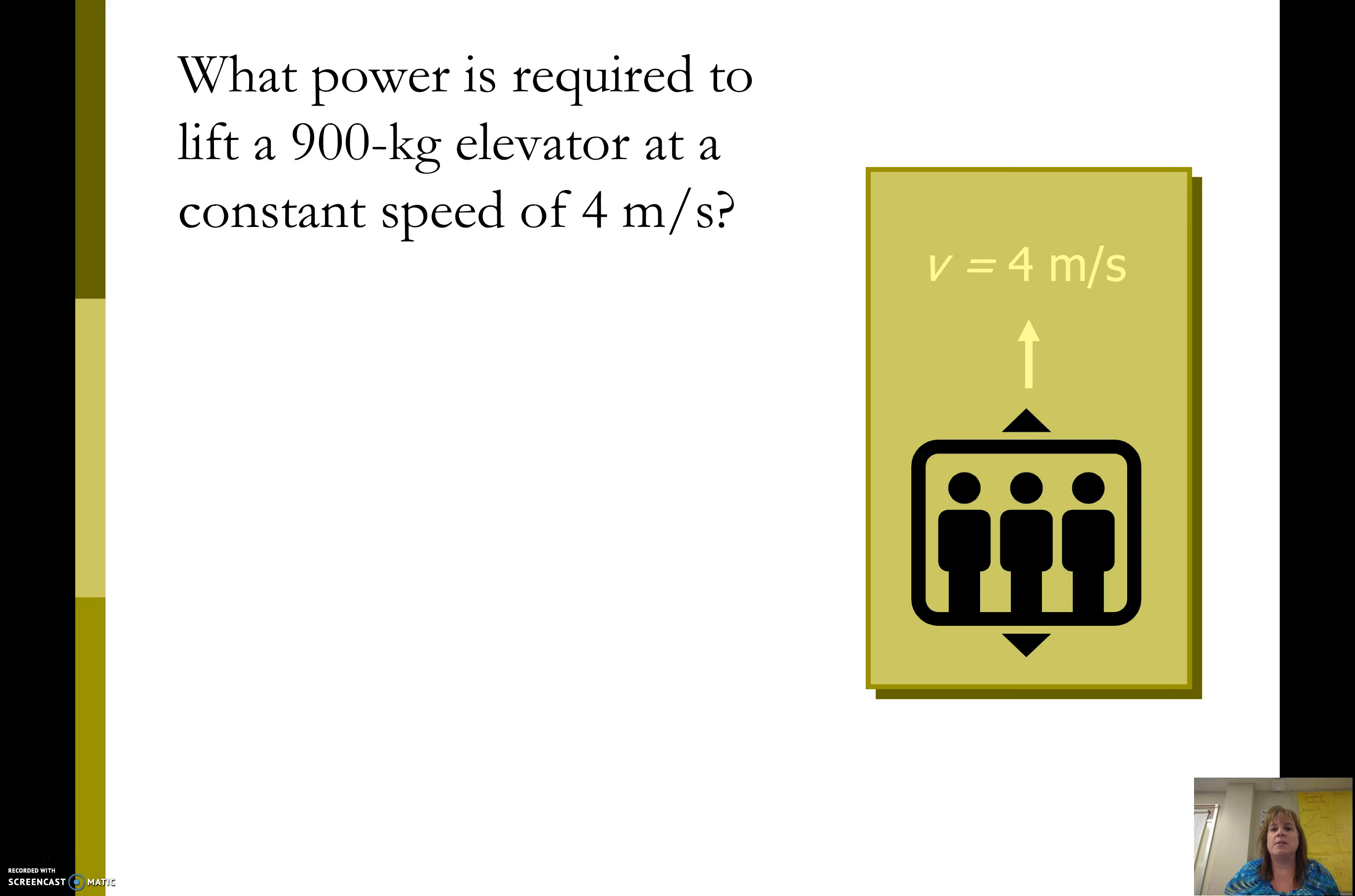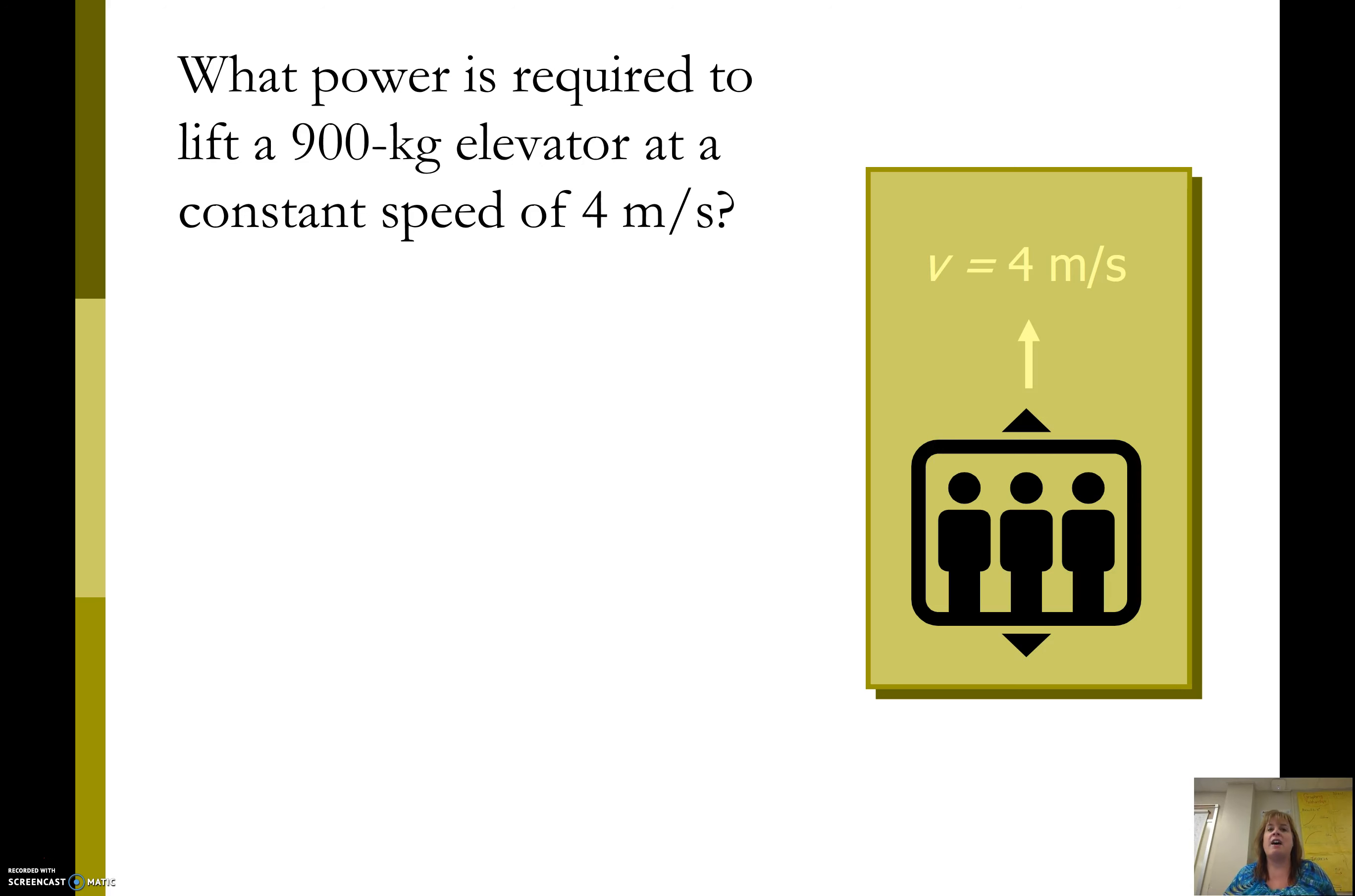Let's take a look at some examples. So here I have an elevator that's 900 kilograms, and it's being lifted at a constant speed of 4 meters per second. What is the output power of the force?